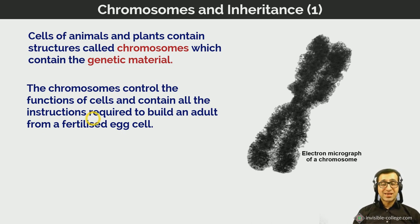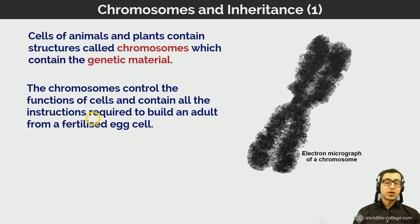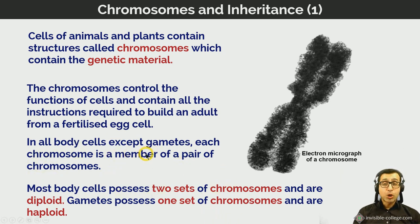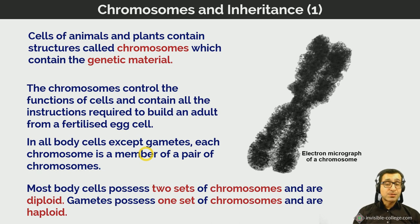In all body cells except gametes, each chromosome is a member of a pair called a homologous pair. Most body cells possess two sets of chromosomes and are referred to as diploid. Gametes possess only one set of chromosomes and are described as haploid.